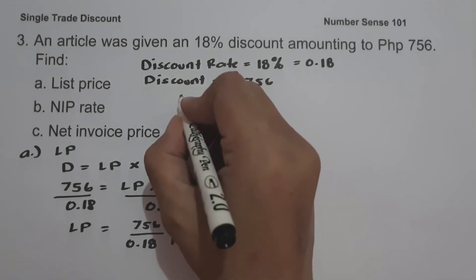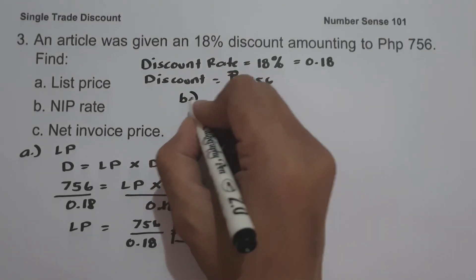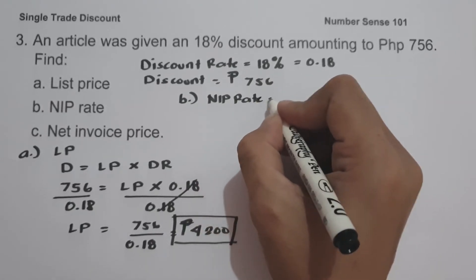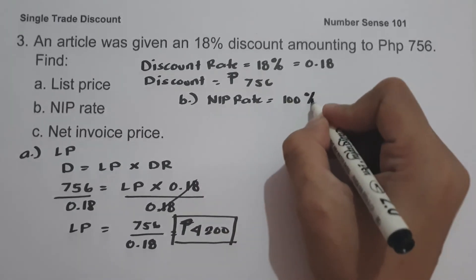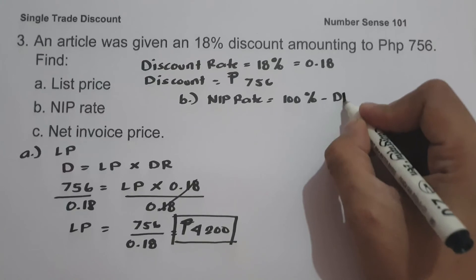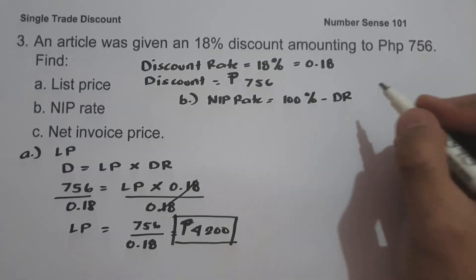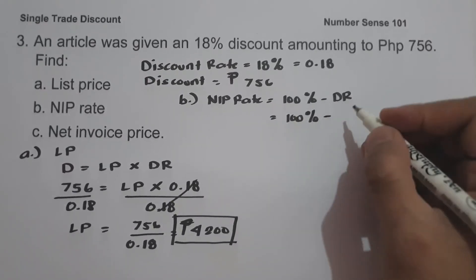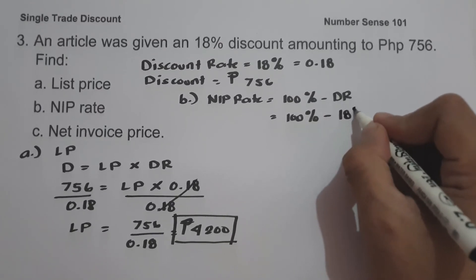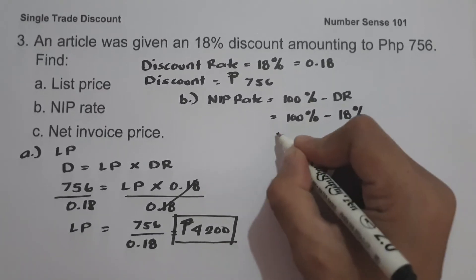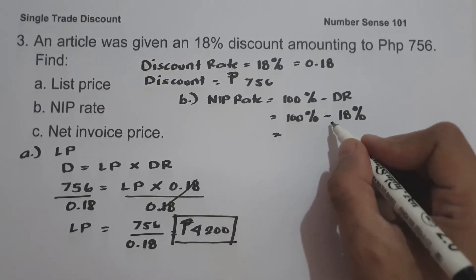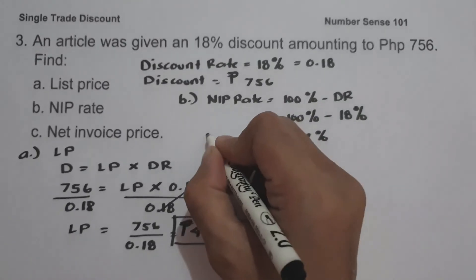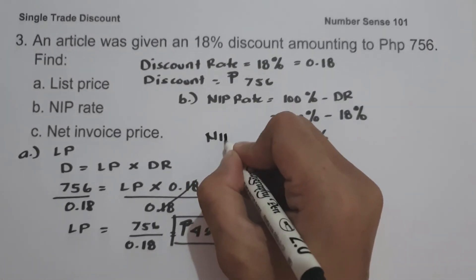On letter B, we are looking for the NIP rate: one hundred percent minus the discount rate. One hundred percent minus eighteen percent equals eighty-two percent. This is our NIP rate.